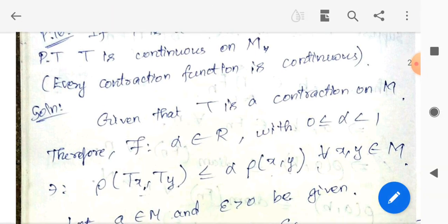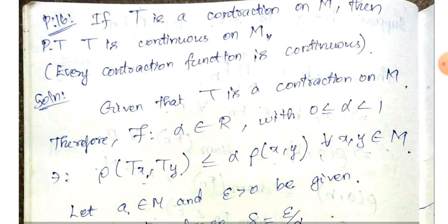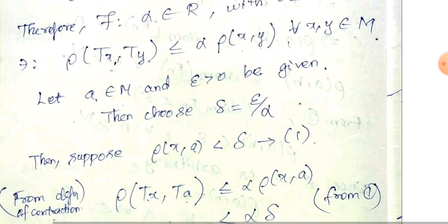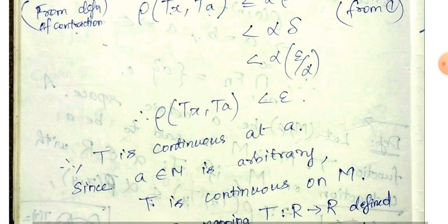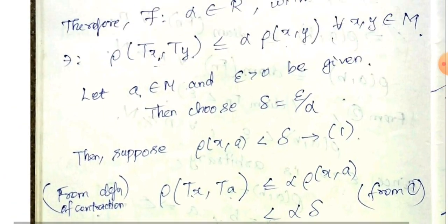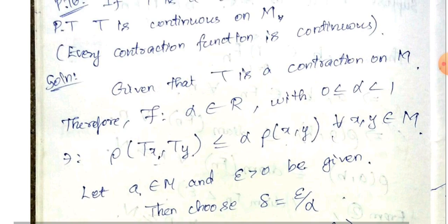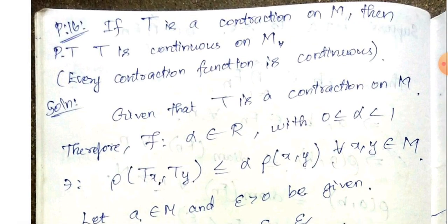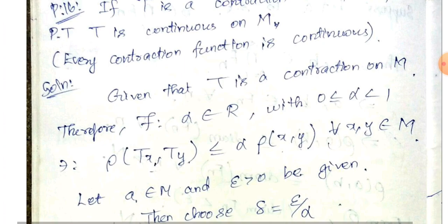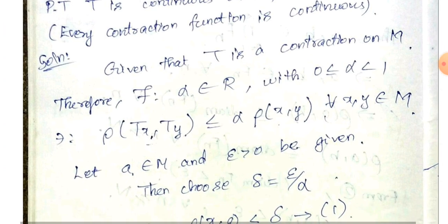Contraction is a basic function, and a contraction function is continuous. Let's prove that T is a contraction on M. Therefore, there exists α ∈ ℝ with 0 ≤ α < 1 such that ρ(Tx, Ty) ≤ α · ρ(x, y).